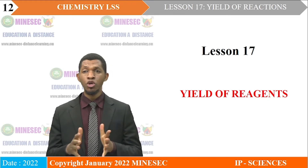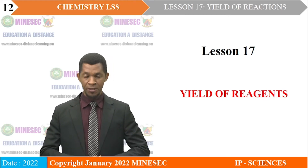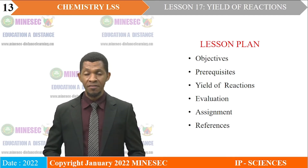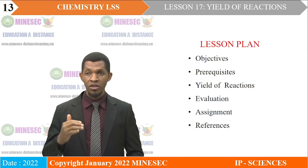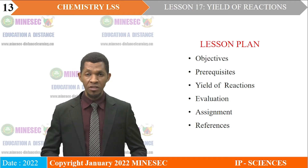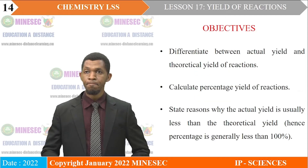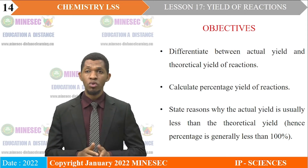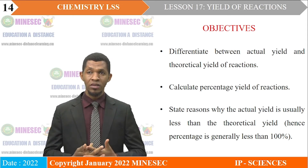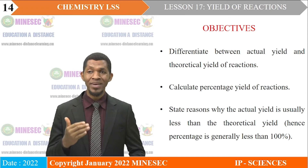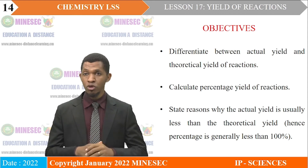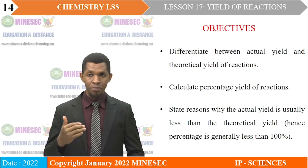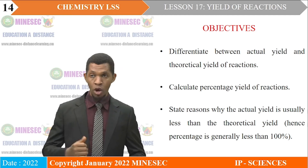Today's lesson is titled: yield of reactions. The outline is as follows. Objectives: by the end of this lesson, you should be able to differentiate between actual yield and theoretical yield of reactions, calculate the percentage yield of reactions, and state reasons why the actual yield is usually less than the theoretical yield — hence percentage yield is generally less than 100%.